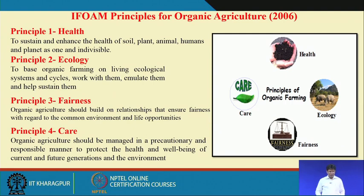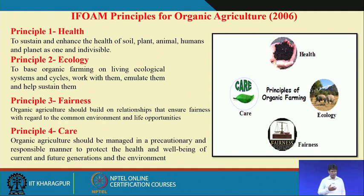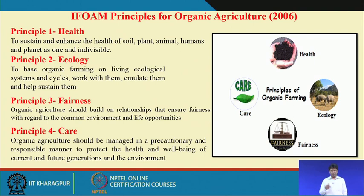IFOAM — the International Federation of Organic Agricultural Movement, started in 1972 with its head office in Germany — defines four principles of organic agriculture. Principle one is Health: to sustain and enhance the health of soil, plant, animal, humans and planet as one and indivisible. This means maintaining soil health, which delivers plant health, then animal health, and finally human health — from farm to plate — as a well-defined organic system.